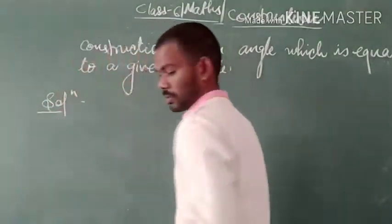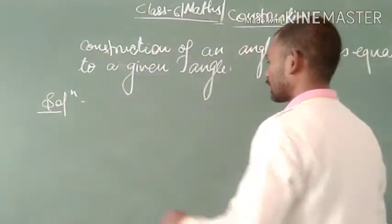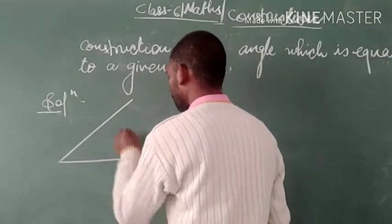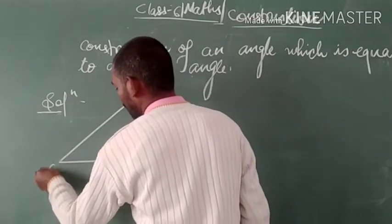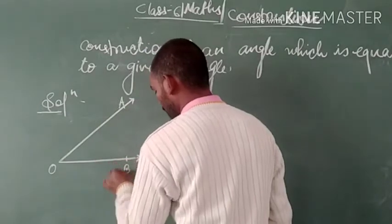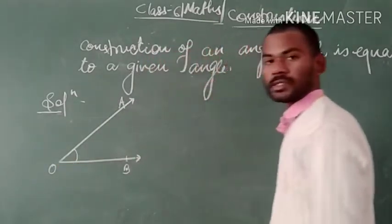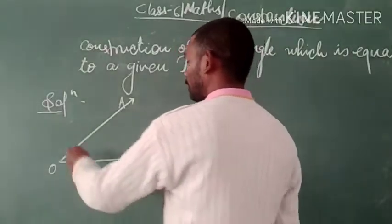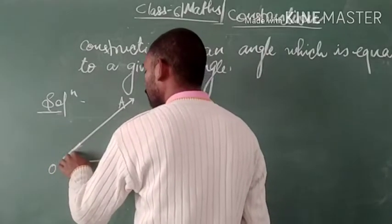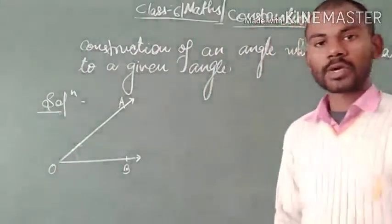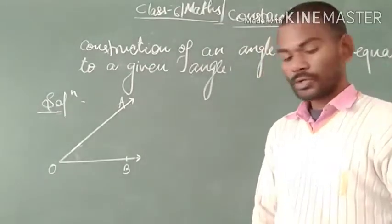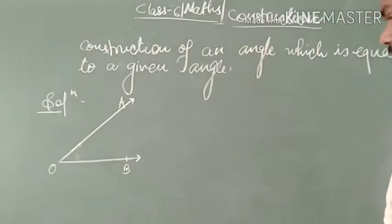Let's take its solution. Suppose that any angle is given like this. This is an angle which is given as angle AOB. This is angle AOB and we have to draw another angle which should be equal to this given angle. Since its measurement is not clear to us, we shall draw an angle which should be equal to this given angle.